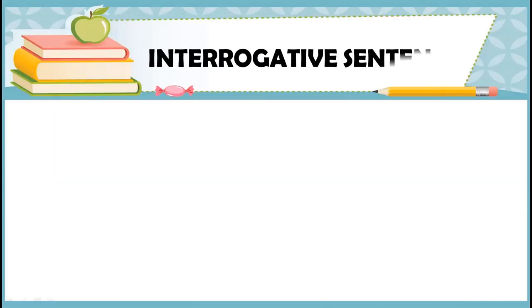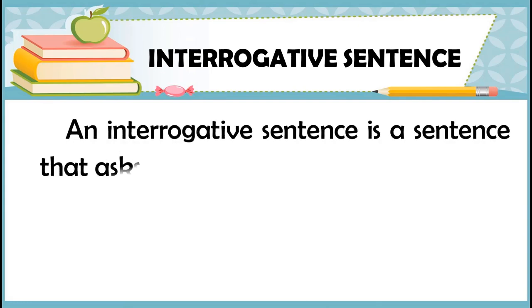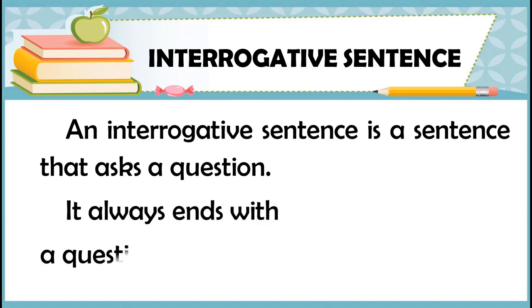The third kind of sentence according to purpose is the interrogative sentence. So, what is the purpose of an interrogative sentence? The interrogative sentence asks a question or requests for information, and it always ends with a question mark.